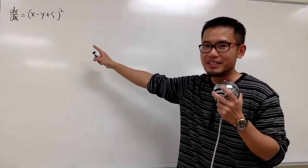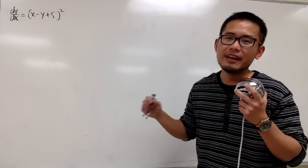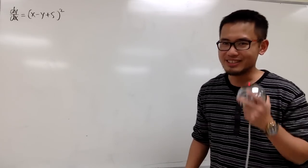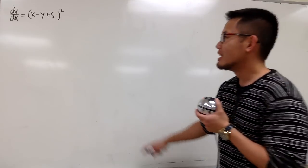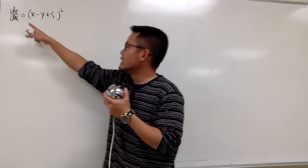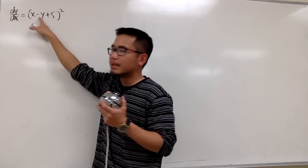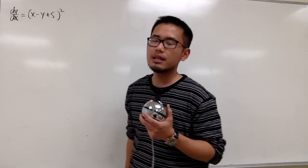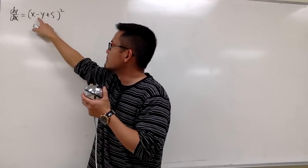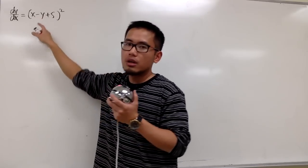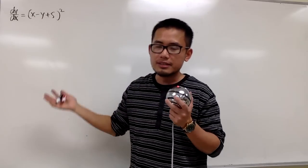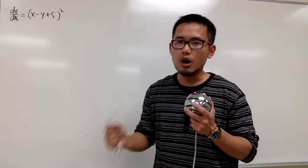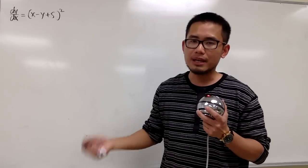I'm going to show you how to solve this differential equation, and this is how we are going to end up with the answer on Wolfram Alpha, so check this out. Here we have dy/dx is equal to (x minus y plus 5) squared. Notice that we have the x minus y here, so this is technically a differential equation in the form of g of ax plus y.